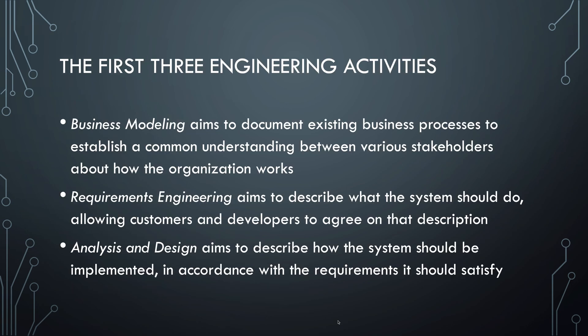We focus on the first three activities. The first is to understand current processes in the business — who's involved in what and how does the organization work in general. Domain modeling is also a part of this activity. Requirements engineering establishes what a system should do and how to get that information from the customers on the one hand and the developers and designers on the other. Finally, analysis and design talks about how the system should be implemented, creating a software architecture that allows you to build what the customer wants within the technical limitations.